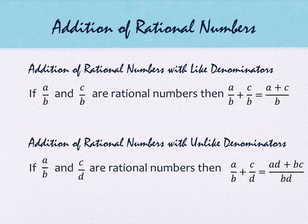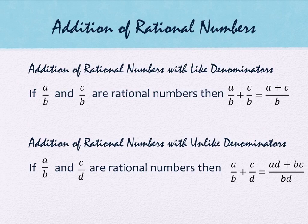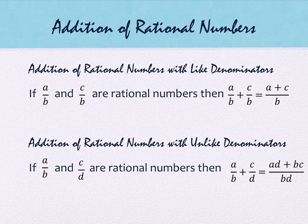So if you have two rational numbers A over B and C over B — rational numbers where B is the same, the denominators are the same — then in order to add fractions that have the same denominator, the denominator stays the same and you add the numerators together. It's that simple.